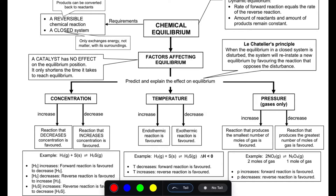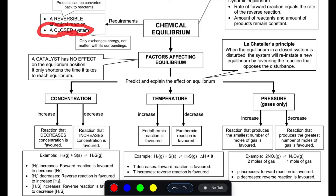There are requirements for chemical equilibrium. It needs to be reversible and in a closed system. By reversible, we mean the products can be converted back to reactants — so from forward, then reverse.